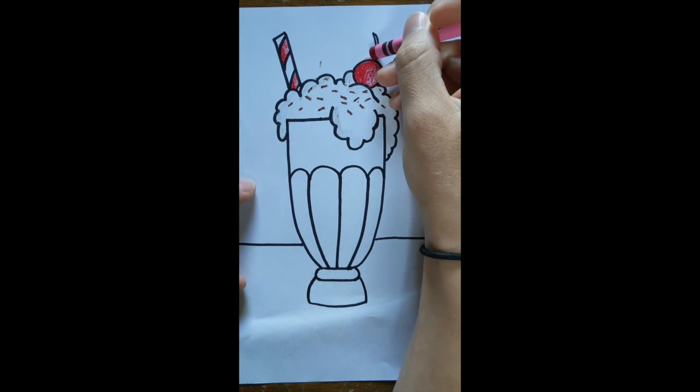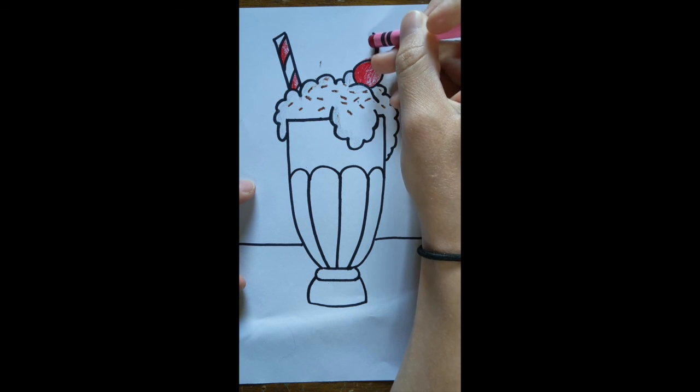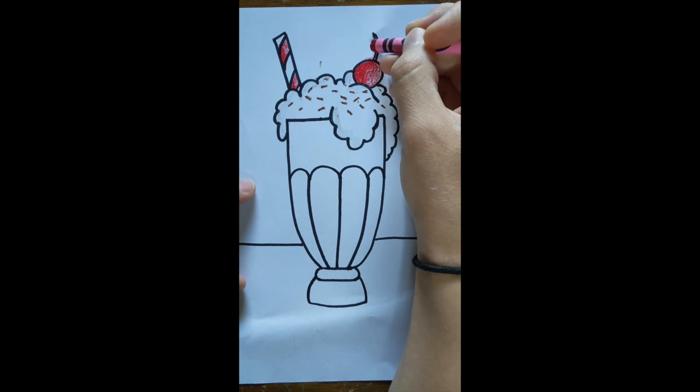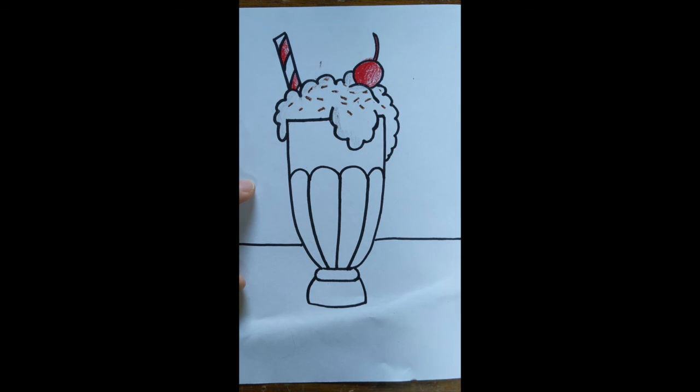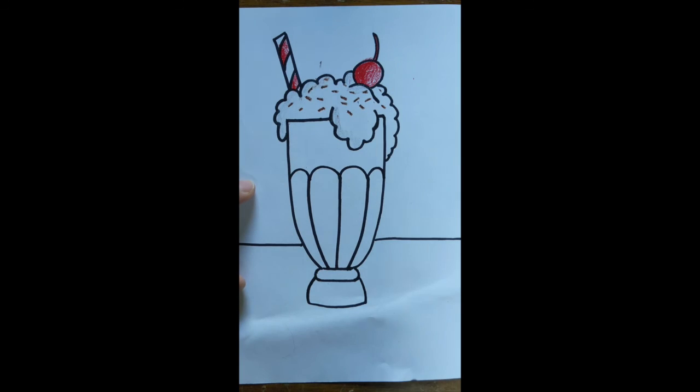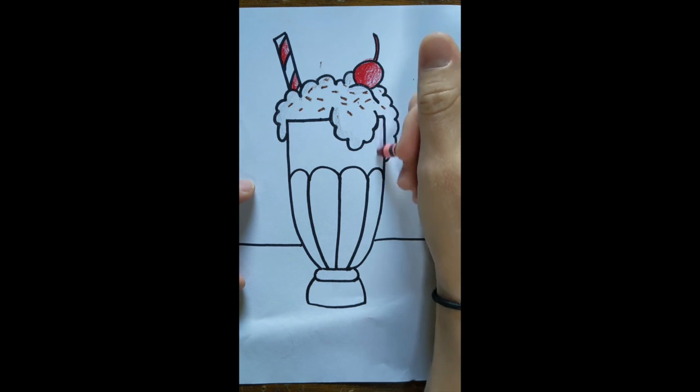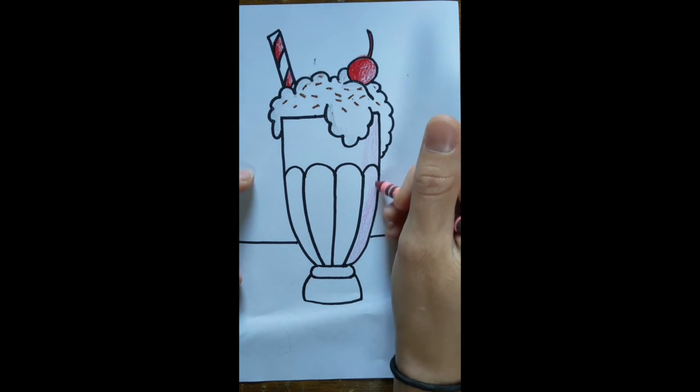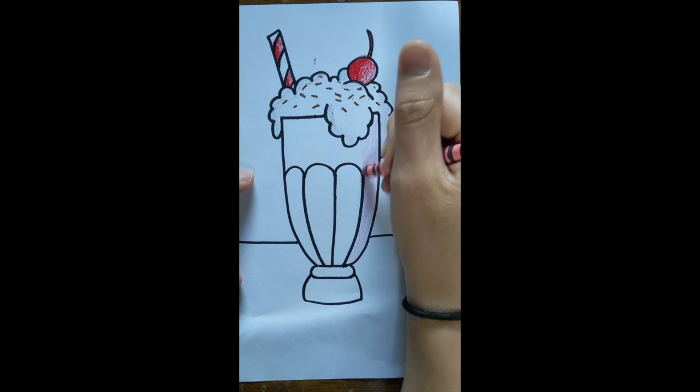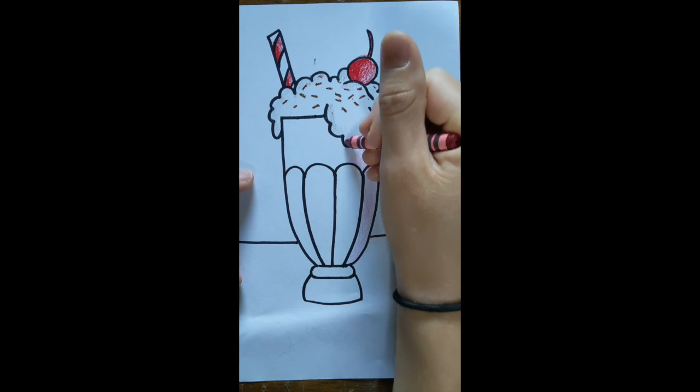And then I'm going to be using my, I have a couple different shades of a pinkish color that I want for my strawberry milkshake. And I'll just be slowly coloring in that milkshake. I'm going to leave the bottom part of my glass clear because there isn't any milkshake down all the way at the bottom. This looks awesome so far.